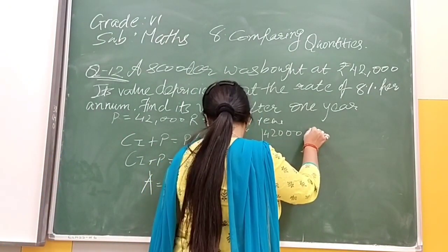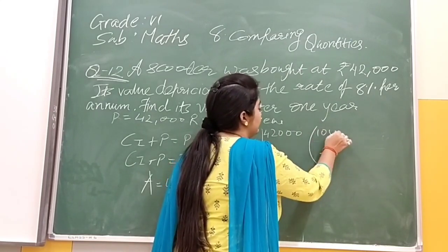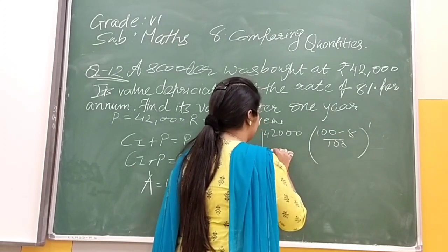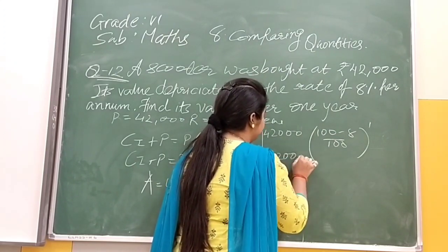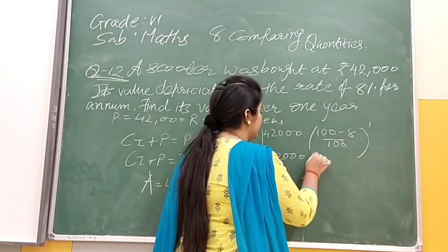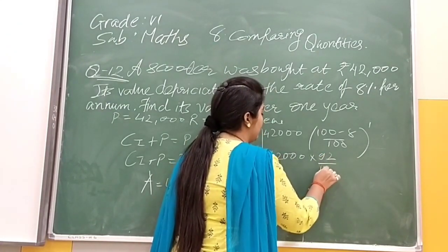So we will have 42,000 × (100 - 8)/100. That equals 42,000 × 92/100.